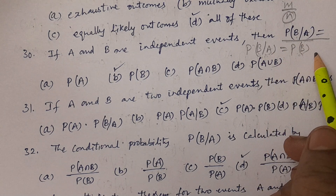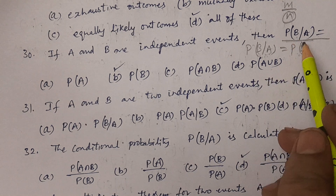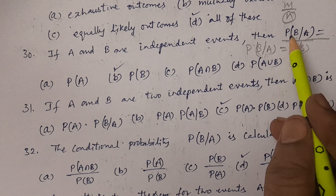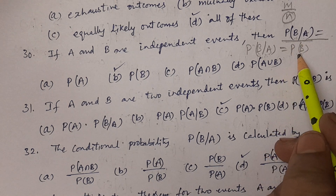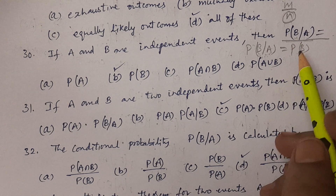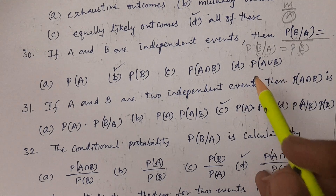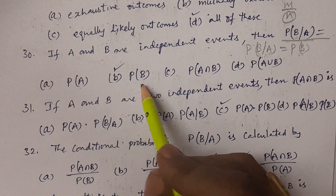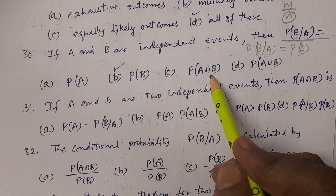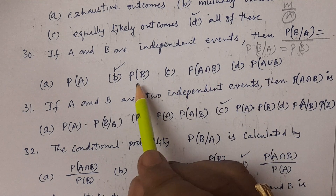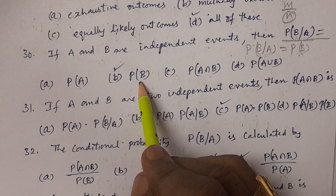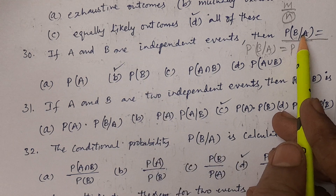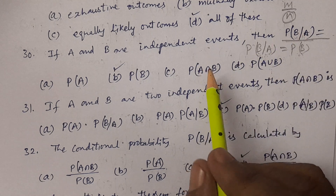P(A|B) = P(A) and P(B|A) = P(B). The options are probability of A, probability of B, P(A∩B), and P(A∪B). The answer is option B, probability of B.